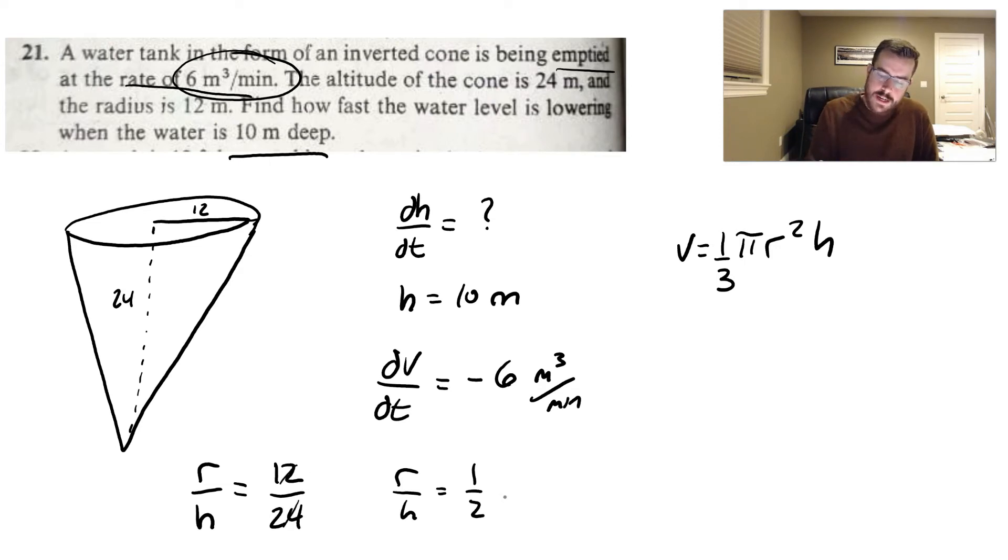So here, if we're trying to solve this, then I can go ahead and cross multiply and get that 2r is equal to 1h. But I want to figure out what r is. So I can just simply say that r is h over 2.